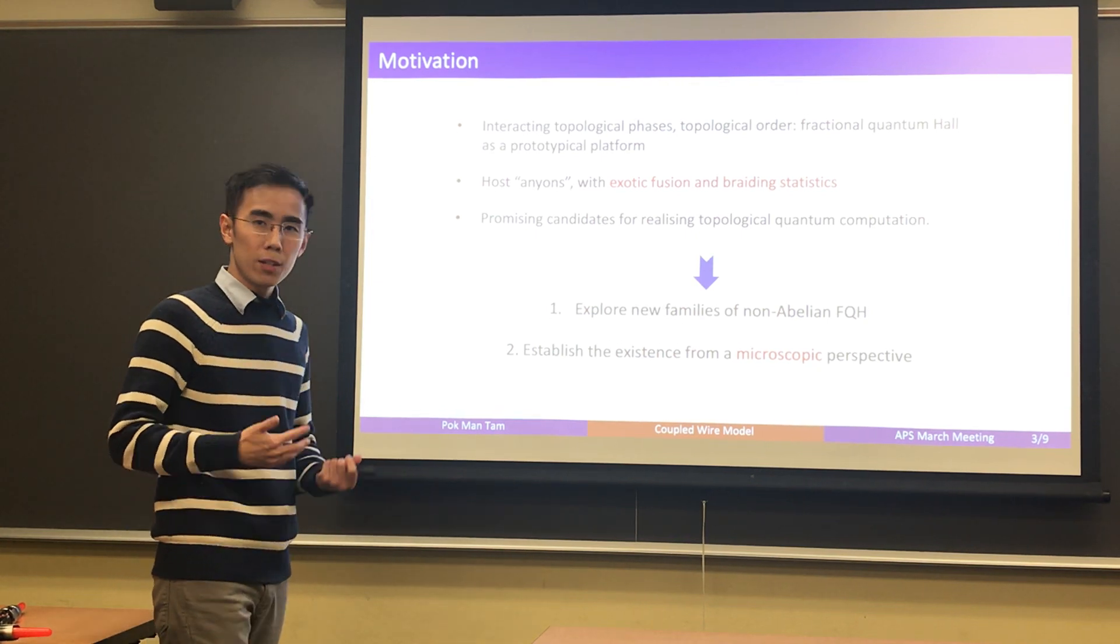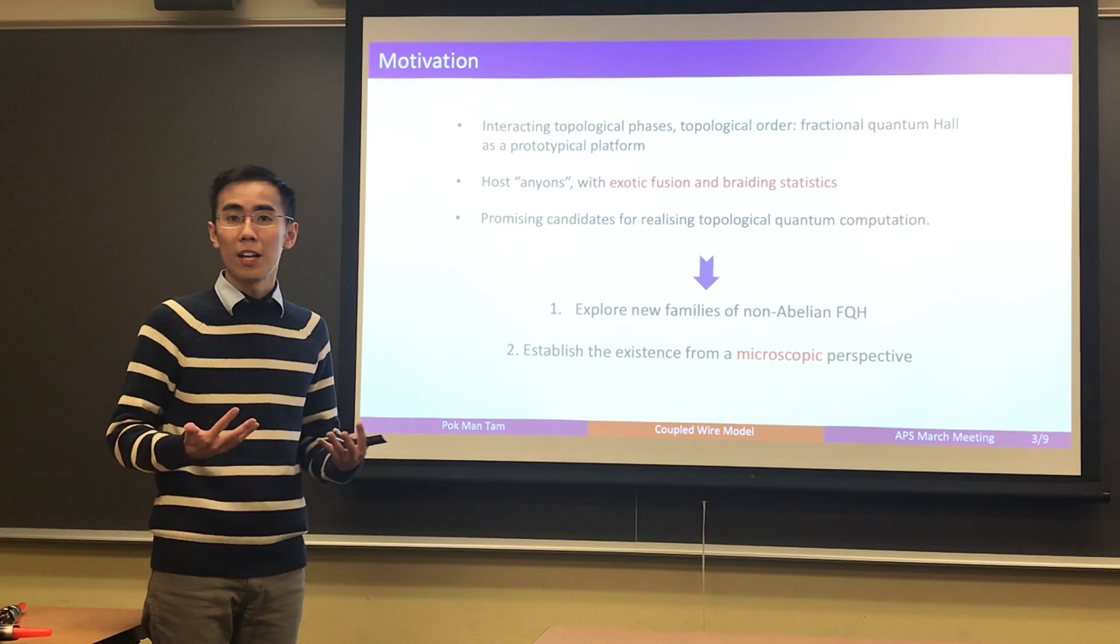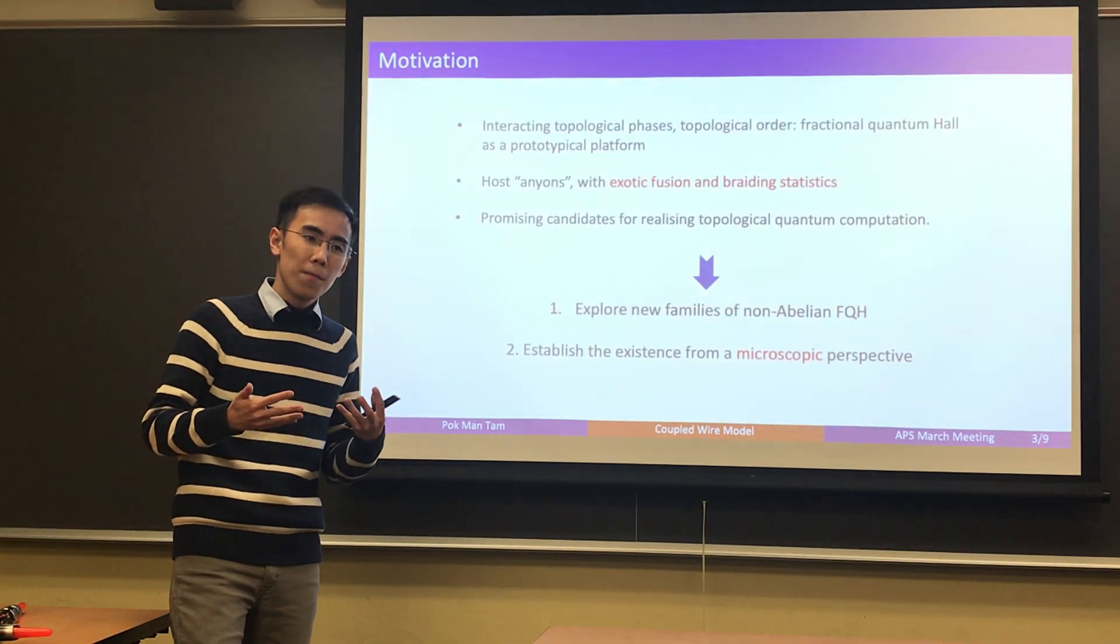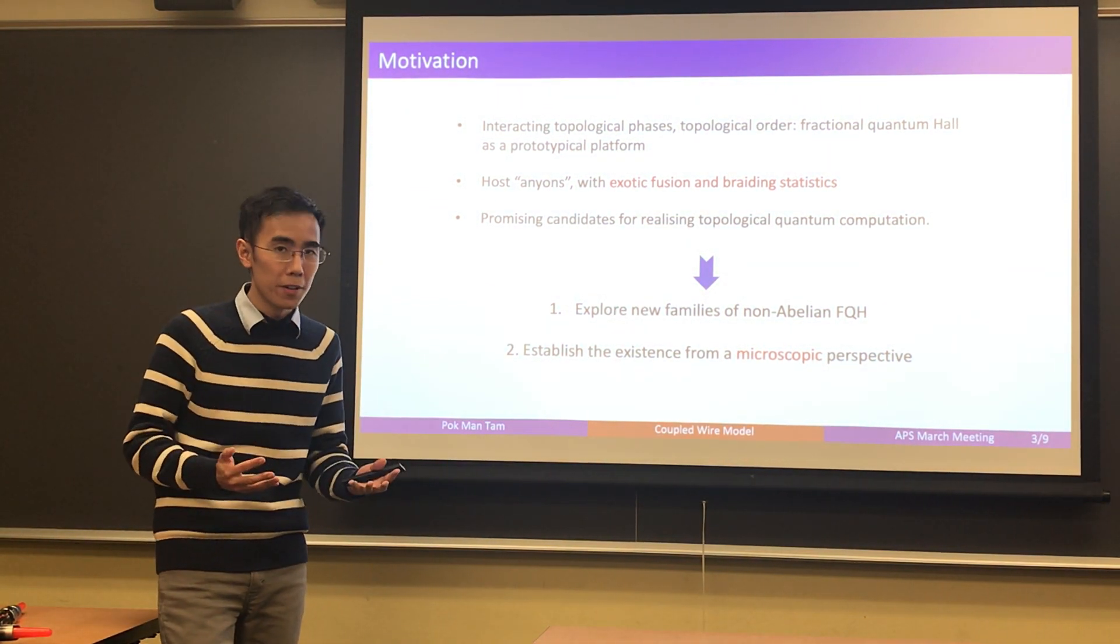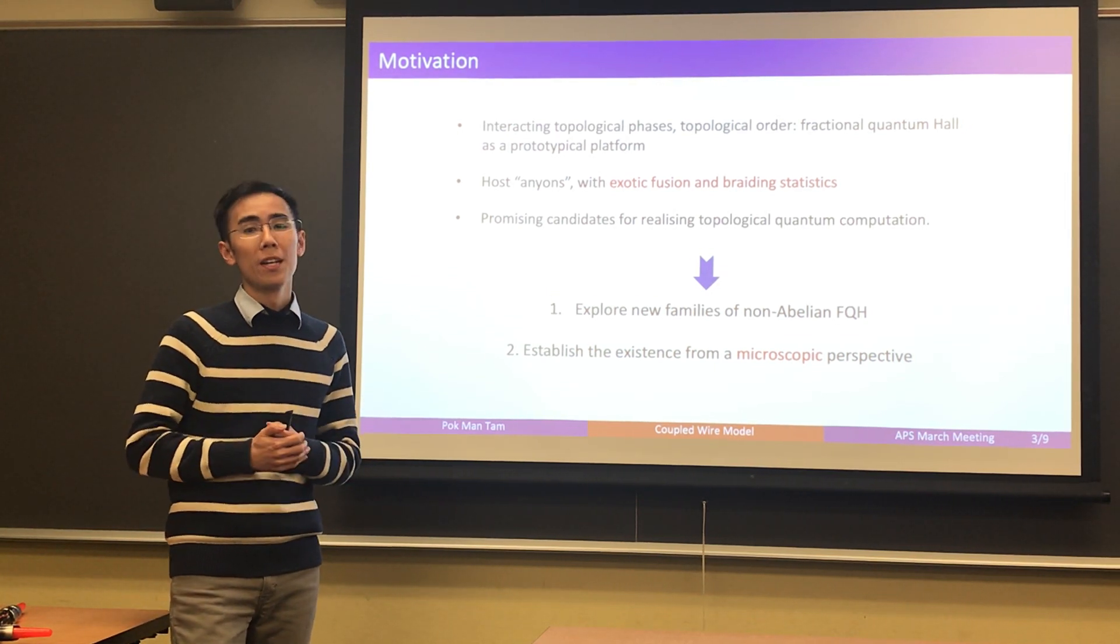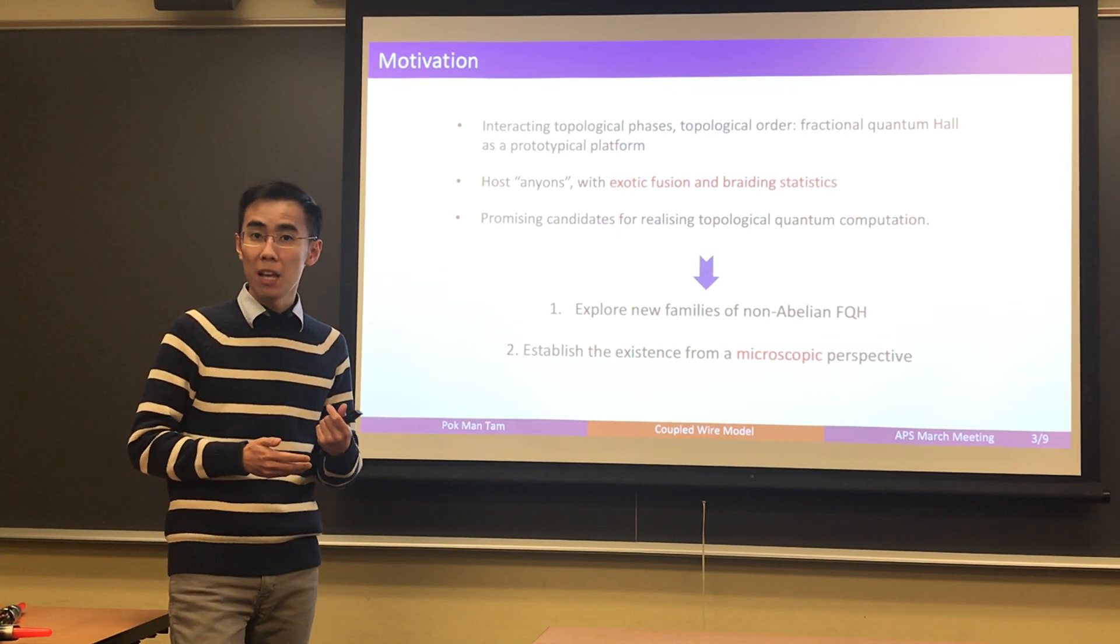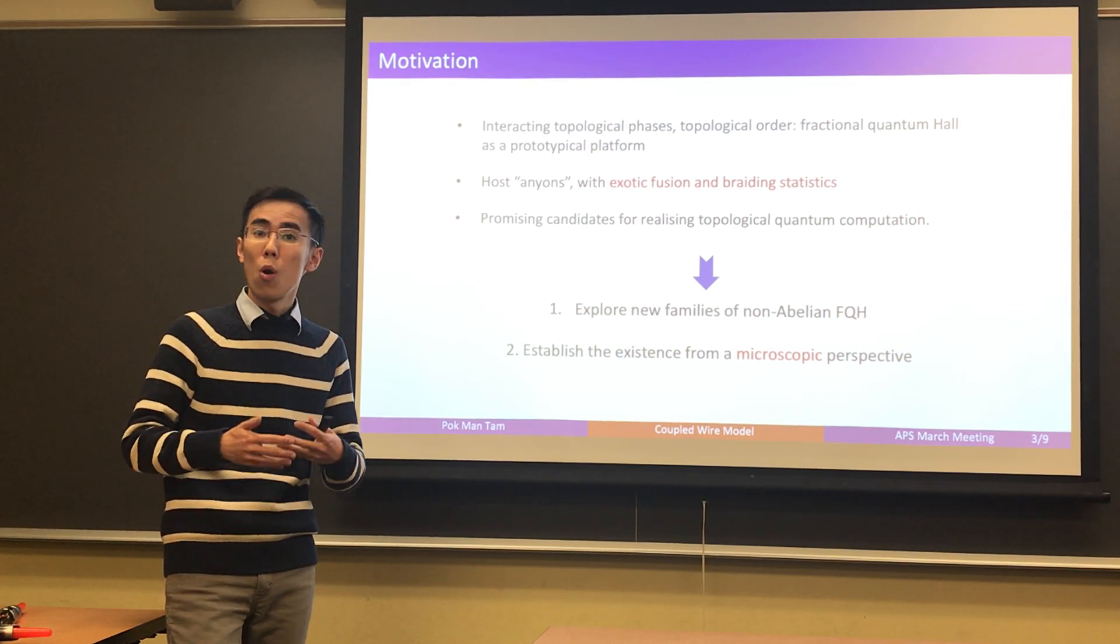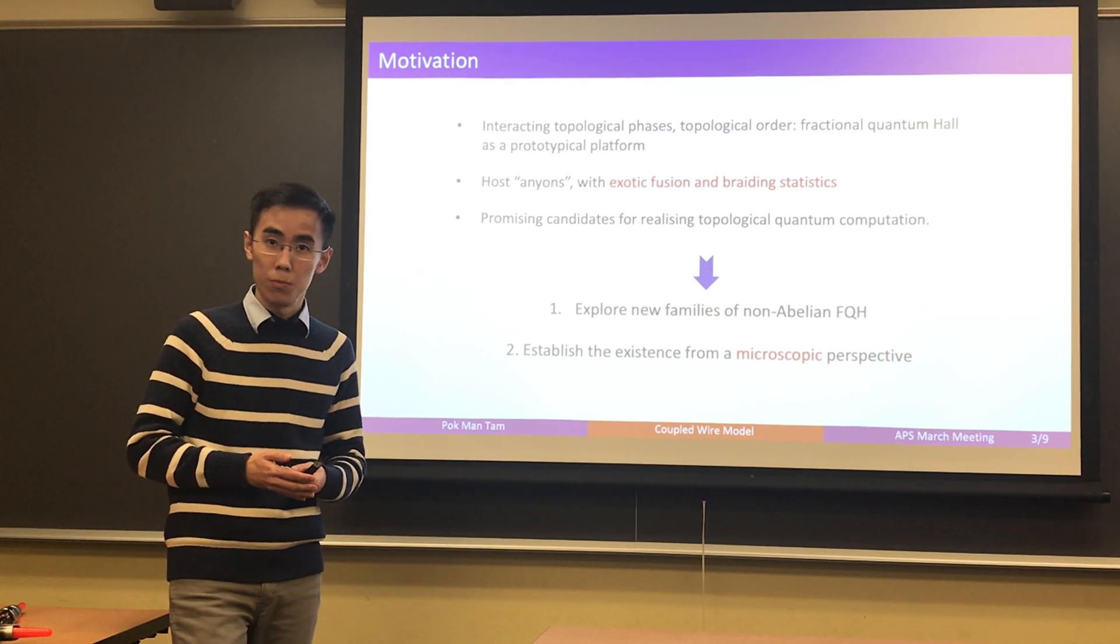We are interested in interacting topological phases and fractional quantum Hall is of course a prototypical example of interacting topological phases. It hosts anyons with exotic braiding and fusion statistics that are so drastically different from the fundamental particles that we have seen in nature. So it's fundamentally important. At the same time it's also practically important because there have been many proposals of using non-abelian anyons in particular to store quantum information topologically and then be used to build quantum computers with robust topological protection.